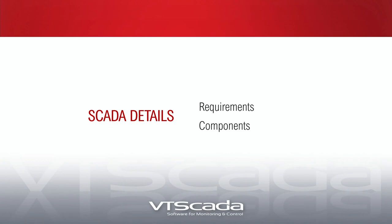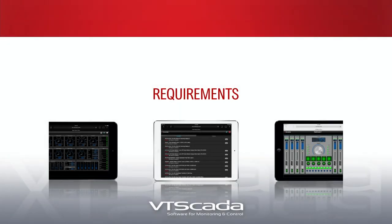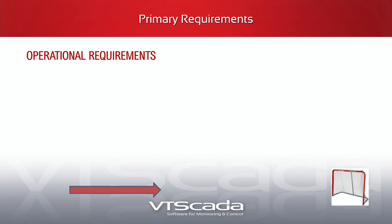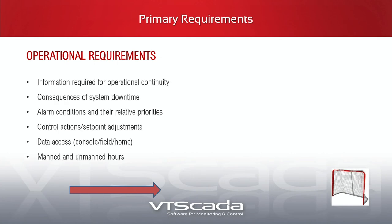We're looking at requirements and then components, starting with requirements. Operationally, we want to make this as functional as possible. We have the information required for operational continuity, and the consequences of system downtime. You want to ensure that if the SCADA software goes down, the system itself can continue operations autonomously. You don't want to rely on any one piece and have a system without fault tolerance. Alarm conditions are a big one.